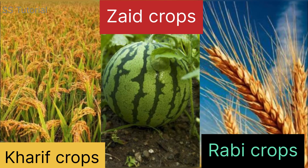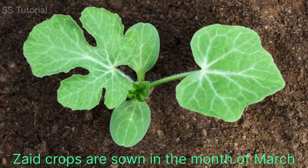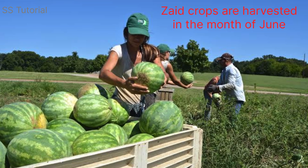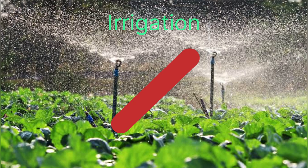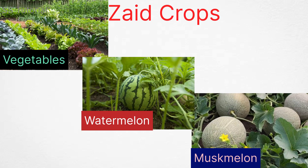The crops which are grown between Kharif crops and Rabi crops are called Zaid crops. Seeds of Zaid crops are sown during the month of March and are harvested in the month of June. Zaid crops are grown for a short period of time and they mature early. They need less water and usually do not need irrigation. Vegetables, watermelon, and muskmelon are examples of Zaid crops.